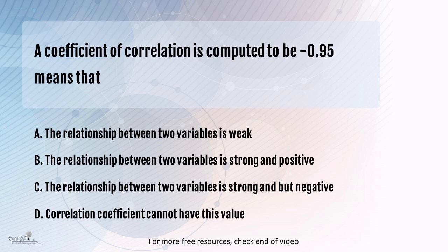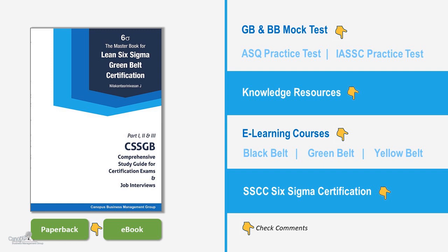The value closer to 1, that is anything greater than let's say 0.8, represents a strong correlation. In this case, you see the value is 0.95, so it is a strong correlation. The sign is minus, which means it is a negative correlation. So the right answer is that the relationship between the two variables is strong but negative.